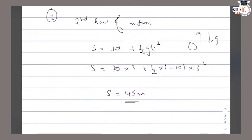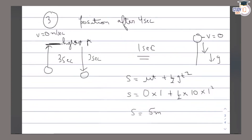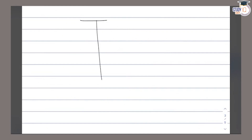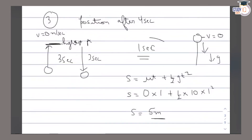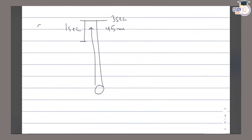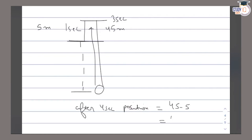The total maximum height was 45 meters. In 3 seconds the ball covered 45 meters going up. In the next 1 second it came down 5 meters. So after 4 seconds the ball's position is 45 minus 5 = 40 meters from the ground.